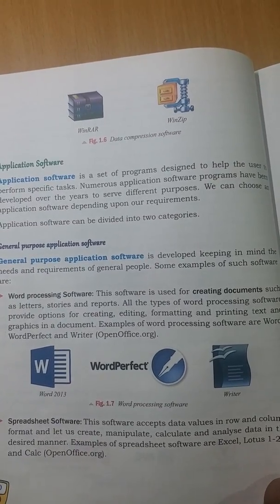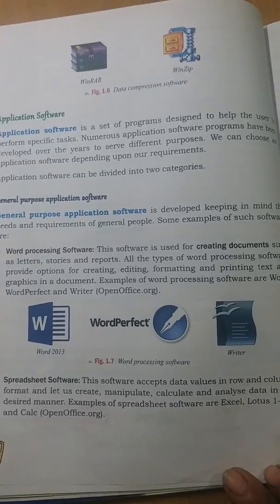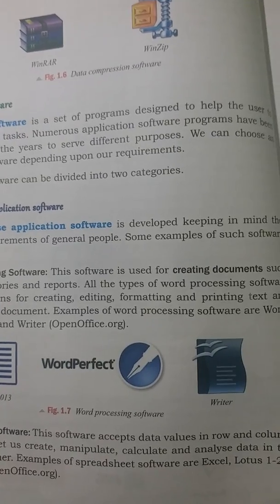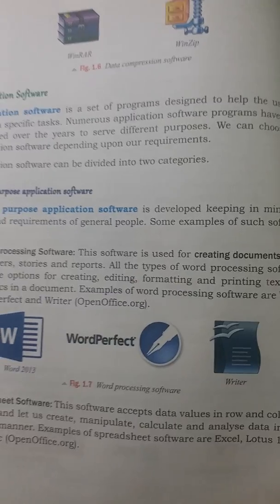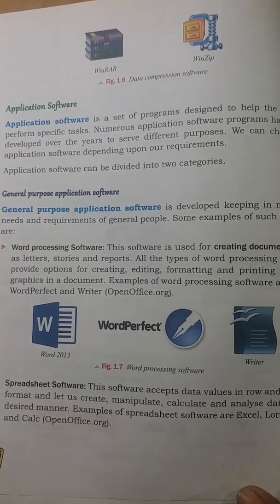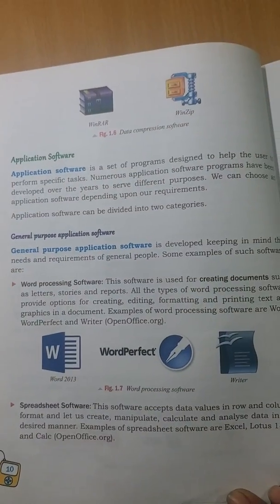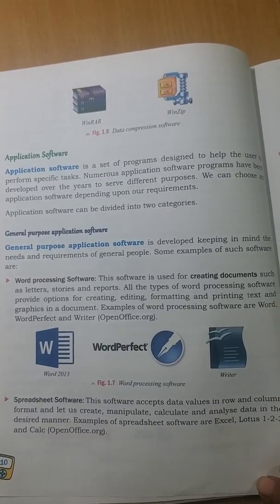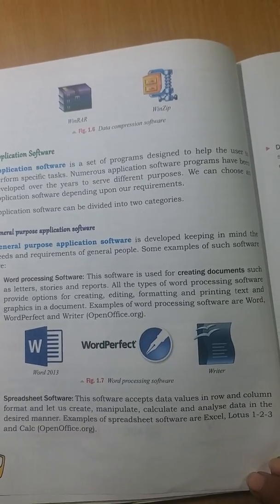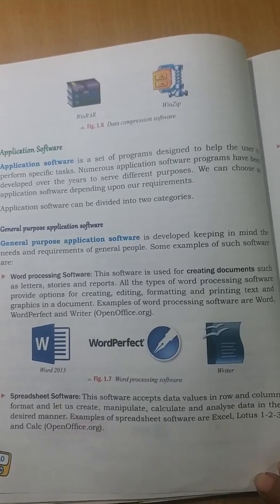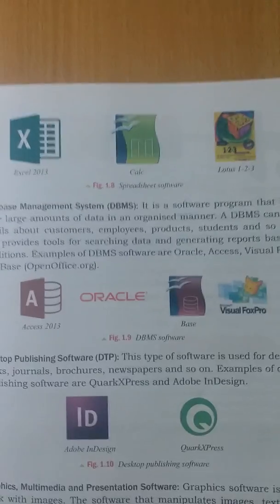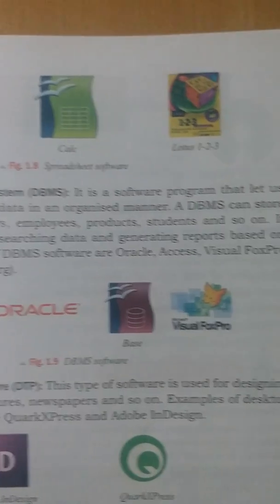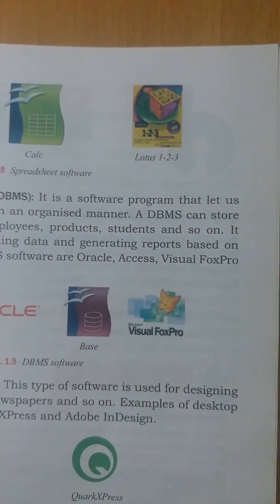Some examples of word processing software are MS Word, which you studied in fifth standard, and LibreOffice Writer, which you will study in ninth standard. Now, spreadsheet software are those software whose workspace looks like a third-class mathematics book with many squares where you write data — those squares are called cells. They are used to perform mathematical operations. Some spreadsheet software are MS Excel, LibreOffice Calc, which you will study in ninth class, and Lotus 123.